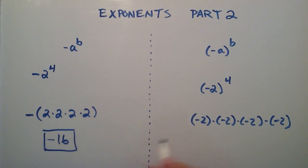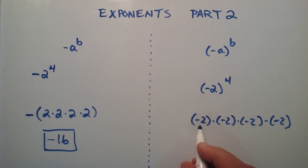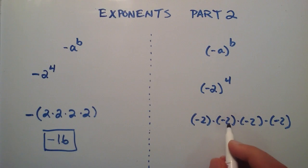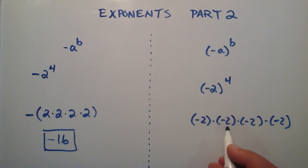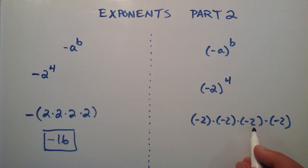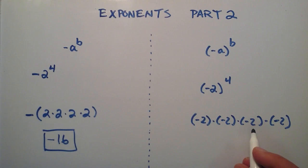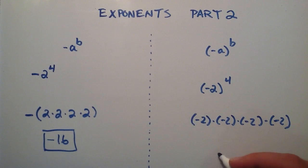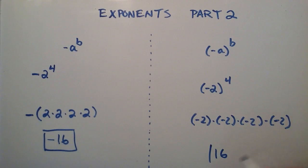On the other side, we're taking the entire negative 2 and multiplying it by itself 4 times. Negative 2 multiplied by negative 2 gives us positive 4. Positive 4 multiplied by negative 2 gives us negative 8. And negative 8 multiplied by negative 2 gives us positive 16.